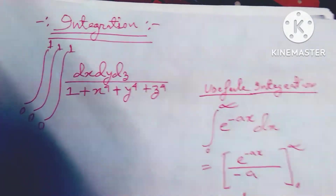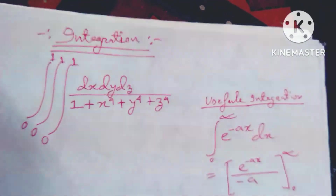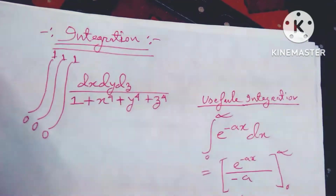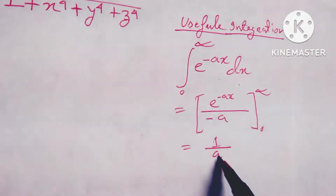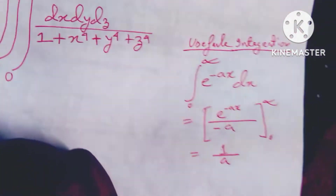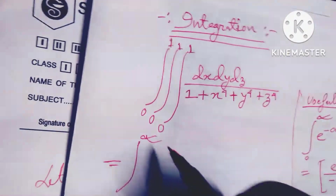Hello dear friends, welcome to my channel. Today's discussion is integration — triple integration of dx dy dz divided by 1 plus x to the power 4 plus y to the power 4 plus z to the power 4. A useful formula to remember: integral from 0 to infinity of e to the power minus ax dx equals e to the power minus x divided by minus a, which is 1 over a. I will apply this formula.